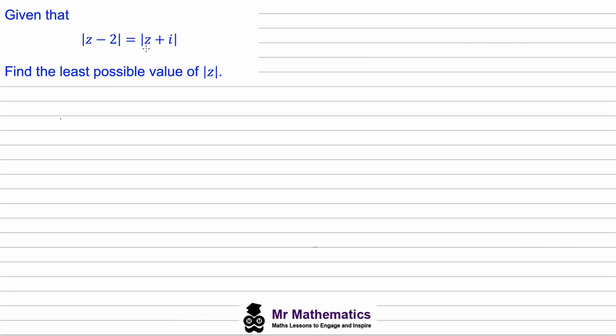We should know that z is a general complex number and the negative 2 and the positive i are two fixed points. If we use the property |z - z1| = |z - z2| which we covered in a previous video,